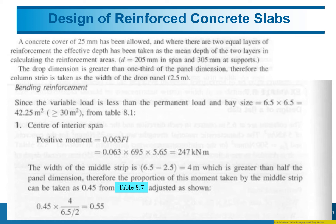First, we need to get the width of the middle strip. We have 6.5 m distance from column to column minus the width of the drop, which is 2.5 m, giving us 4 m, which is greater than half of the panel dimension. Therefore, the proportional moment taken by the middle strip can be taken as 0.45.